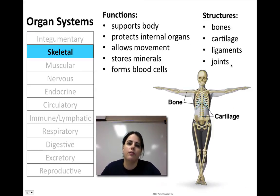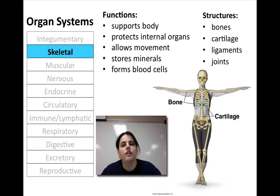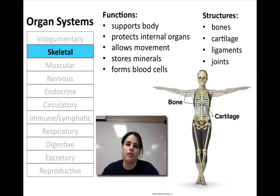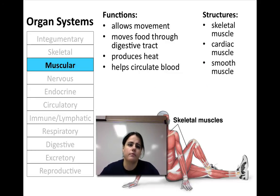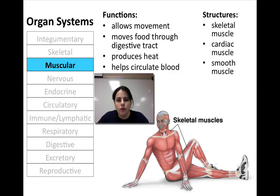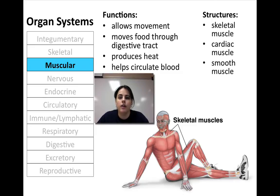The skeletal system is pretty much the support system for the body — it holds you up, protects internal vital organs like the heart and lungs, stores minerals like calcium, and your bone marrow is able to make blood cells for your cardiovascular system. Bones, cartilage, ligaments, and joints are the main parts. The muscular system obviously allows for movement, and also allows for smooth muscle contractions in your digestive tract to move food through. Contractions of muscles also produce heat and help circulate blood. The three main types are skeletal, cardiac, and smooth muscles.